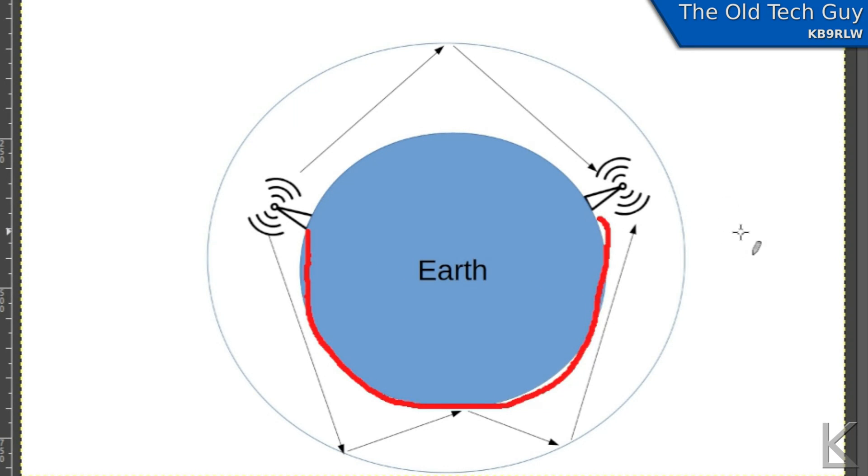In multi-path reception, as in this diagram here, let's say that there are conditions that are just right that the signal is actually able to make it via long path all the way down to our receiving station.